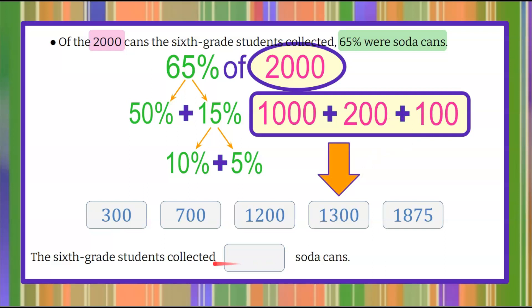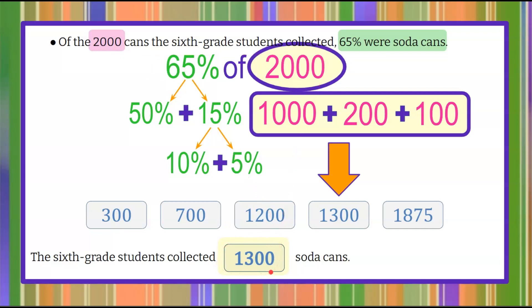So now I know that the 6th grade students collected 1,300 soda cans. Of the 2,000 cans collected, 65% were soda cans, and 65% is 1,300.